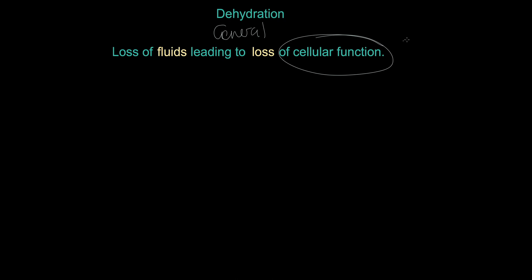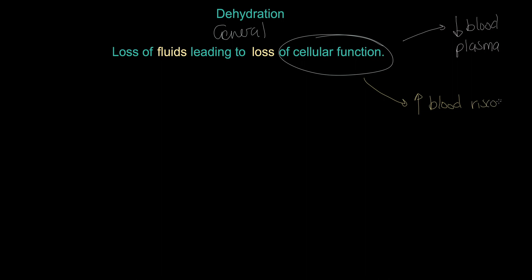This is what we might expect to happen. First of all, we would get a decrease in blood. Let's imagine you've been exercising — running in hot conditions and you've been sweating quite a bit, half an hour or so. Your blood plasma levels may well decrease. This has the knock-on impact that your blood viscosity — the thickness, stickiness — is going to go up. As a result, you are going to have a decrease in your stroke volume.